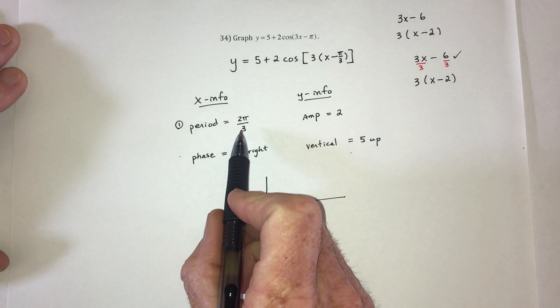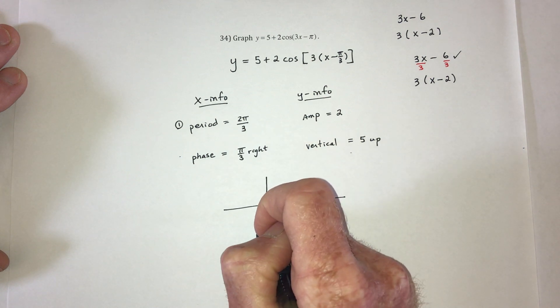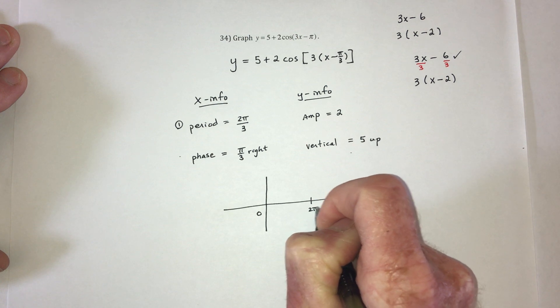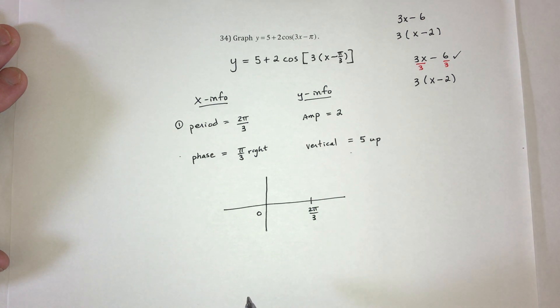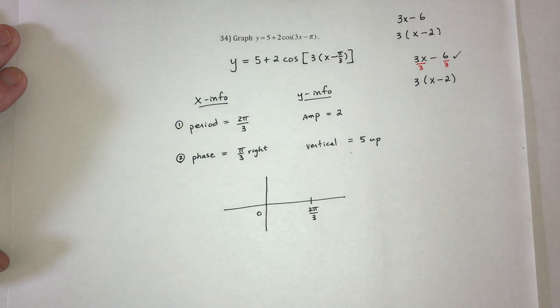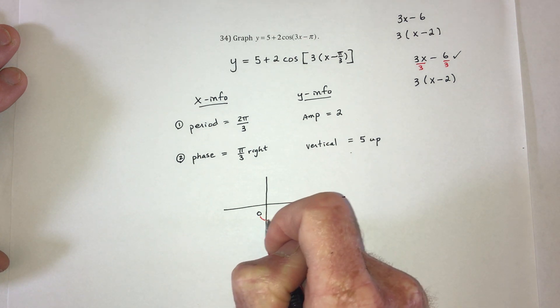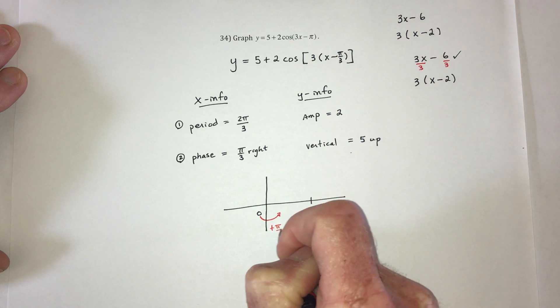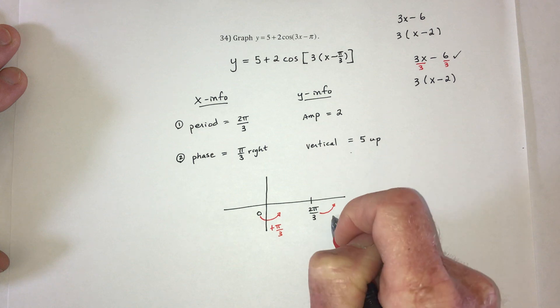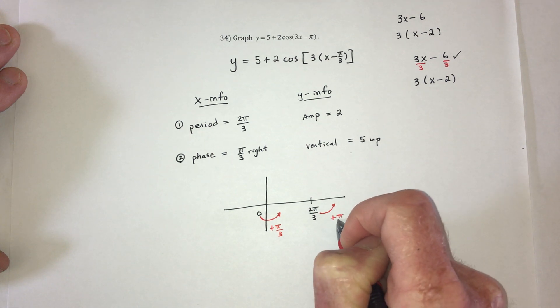So just because of that, that means it's going to take from 0 to 2 π over 3 to draw the graph. Next, do the phase shift. So these numbers need to be shifted to the right. So this one, you have to shift it to the right or add π over 3. And this one, you have to shift it to the right or add π over 3.